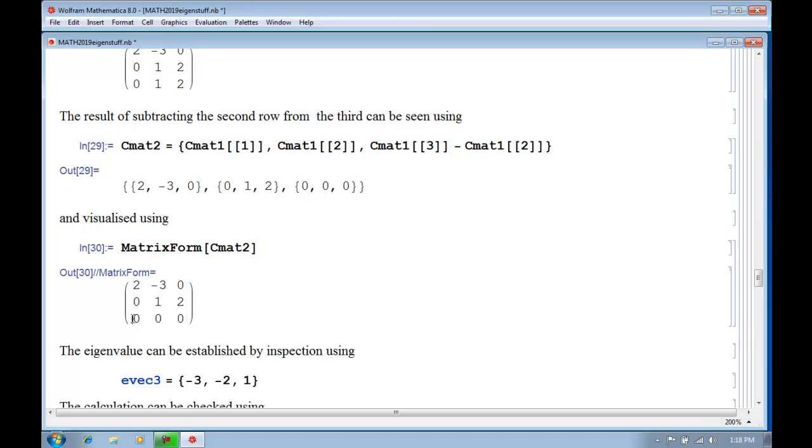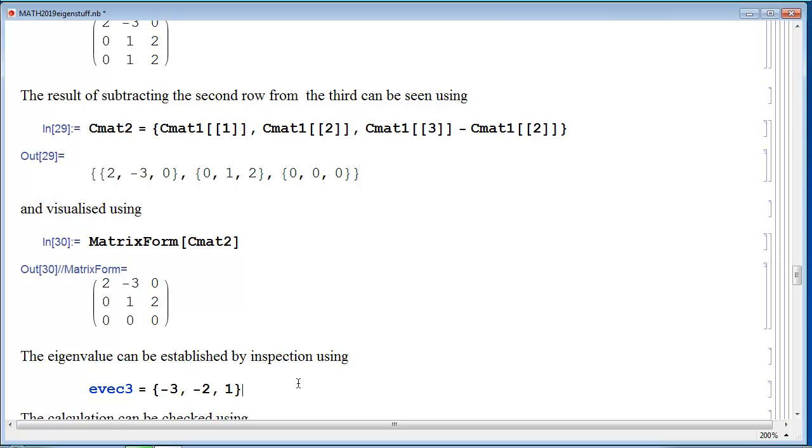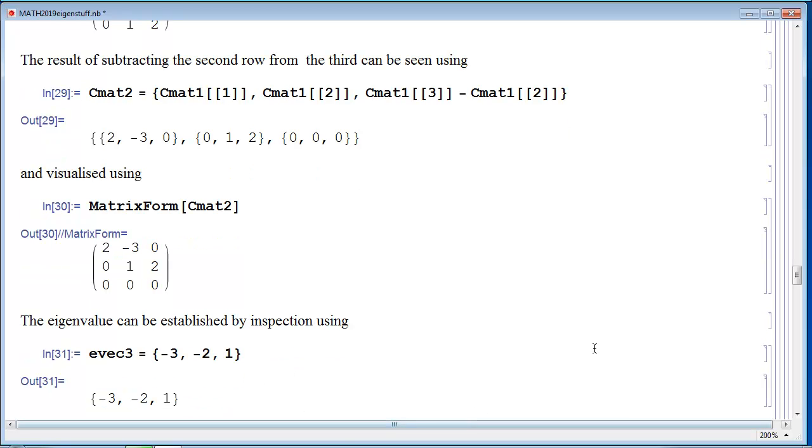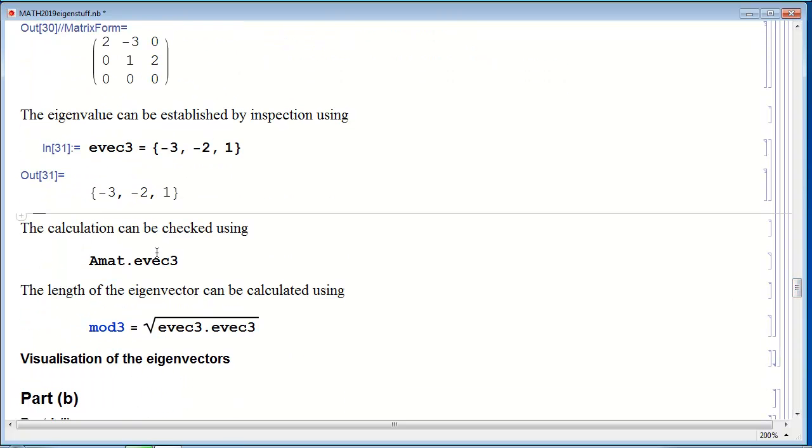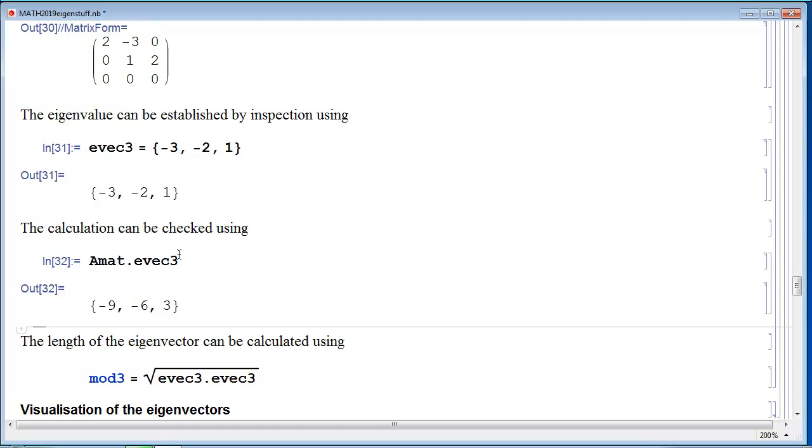So again, we can choose the third element of the eigenvector to be anything we like. So we choose 1. And this here tells me that the second element is minus 2 times the third element. So that will be minus 2. And then finally, twice the first element will be equal to minus 3 times the second element. So our eigenvector will be this. And we can test that using that and then calculate its length.